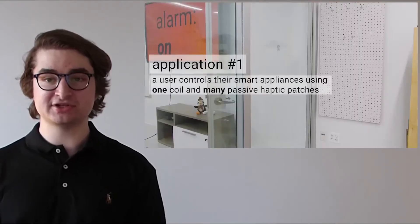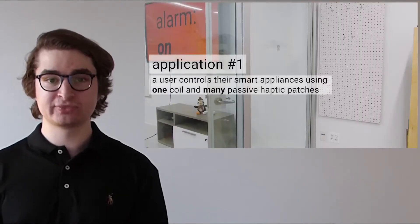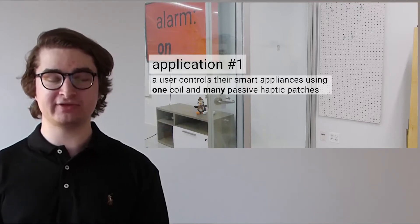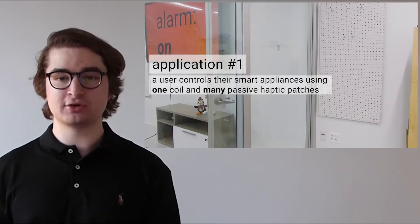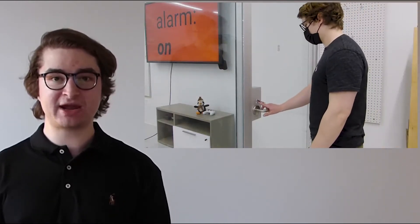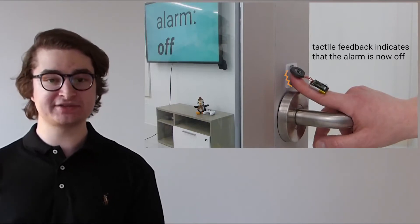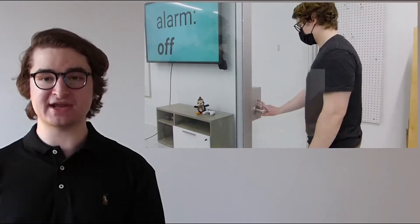Let me use some applications to illustrate how MagnetIO works. Here we see a user in their home using MagnetIO to control their environment. The user wears our coil on their nail, and as they walk inside, they tap the patch on their door and are met with two vibrations, confirming in an eyes-free way that their home alarm is now disabled.